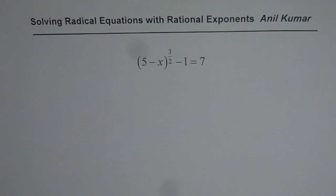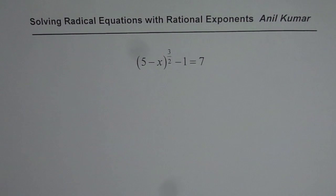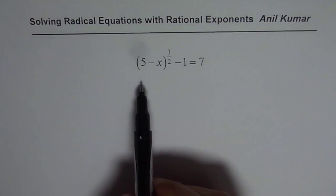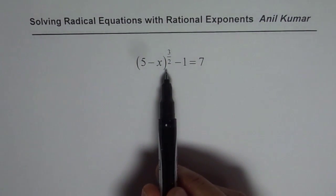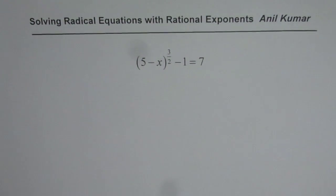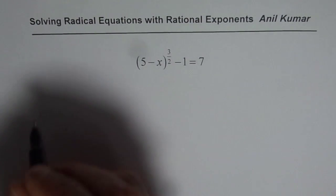I am Anil Kumar and in this video we will learn how to solve equations with rational exponents. The equation given to us is 5 minus x to the power of 3 over 2 minus 1 equals 7. So let us rewrite the equation and then solve.